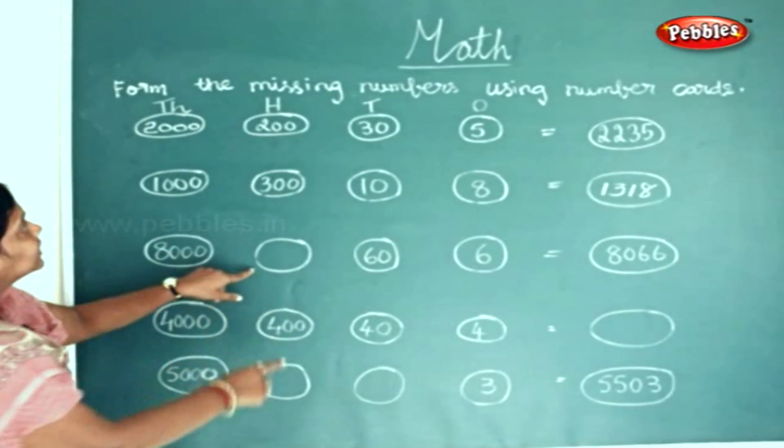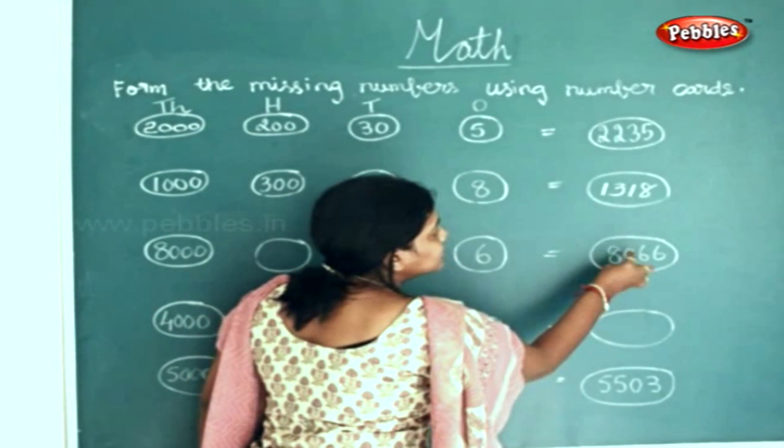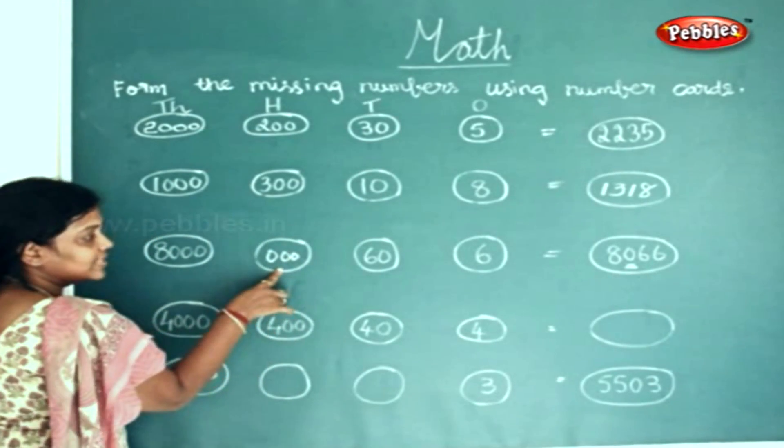Now you find what you have in the hundreds place. In the hundreds place you have a 0. So we will write 0 in the hundreds place.